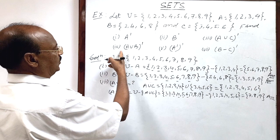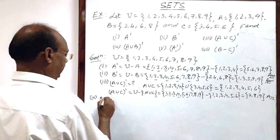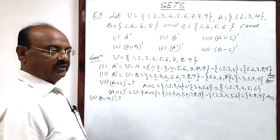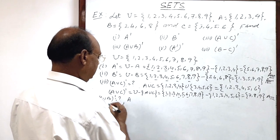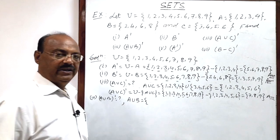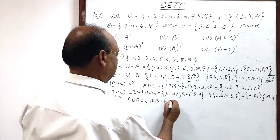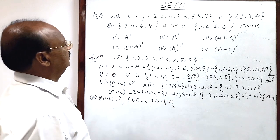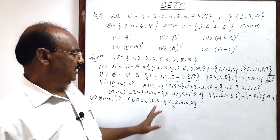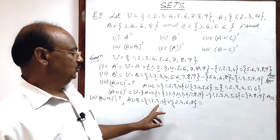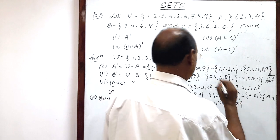Similarly, we can find A union B whole complement. Question number 4: we have to find A union B whole complement. First of all, we will find A union B. Set A = {1, 2, 3, 4} union set B = {2, 4, 6, 8}. Union is the collection of all elements from both sets, so A union B = {1, 2, 3, 4, 6, 8}.